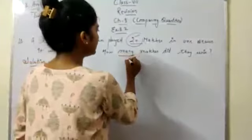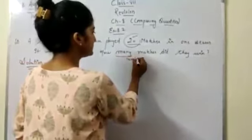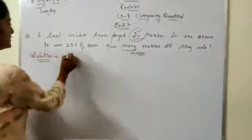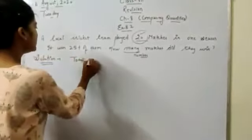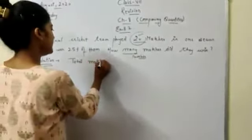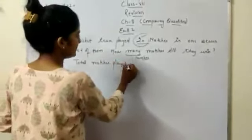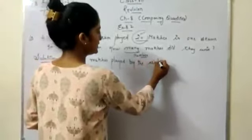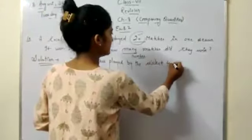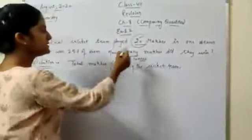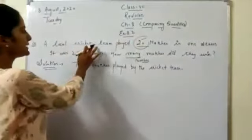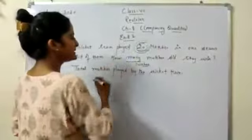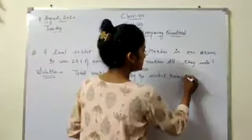It means we have to find the number. So, total matches played by the cricket team in one season is 20 because they said a local cricket team played 20 matches in one season. It means total matches played by the team is 20 matches.